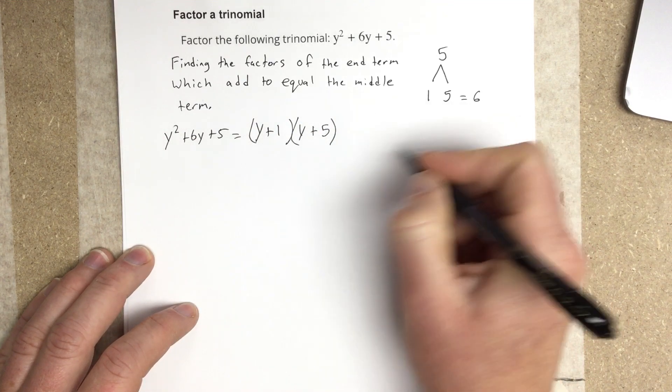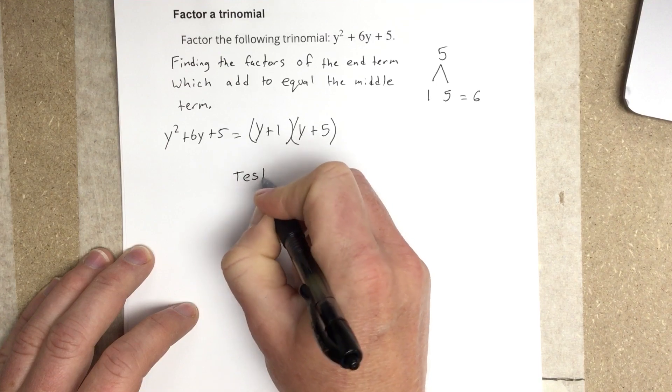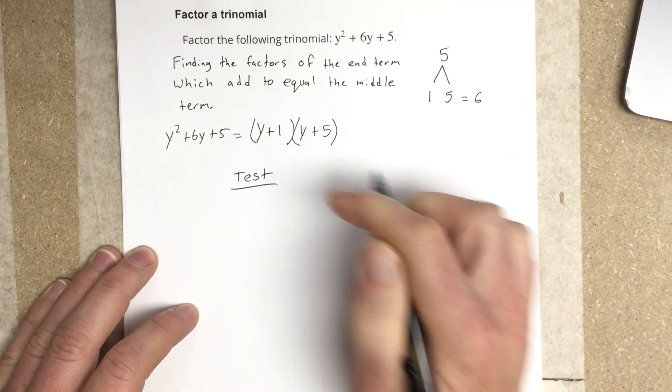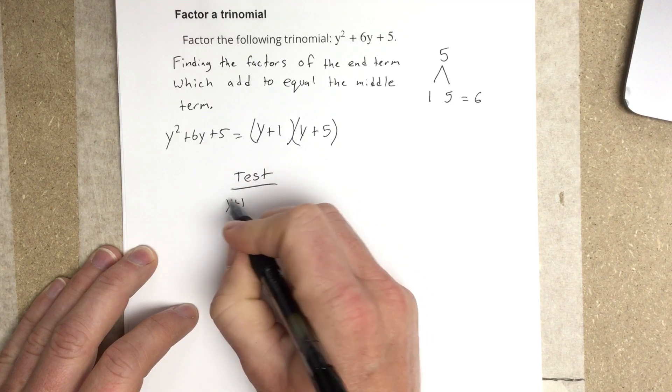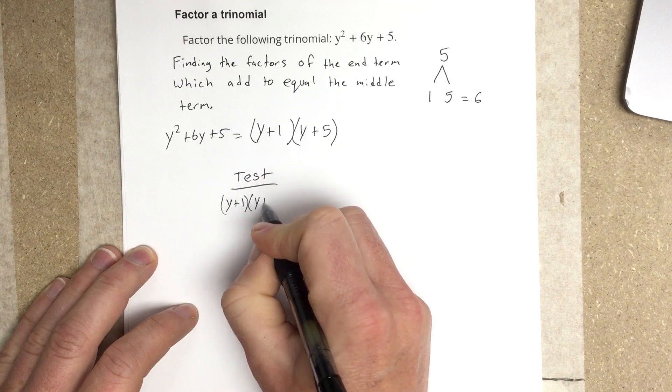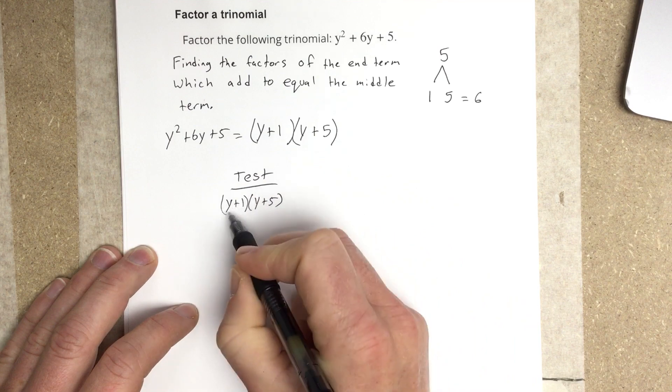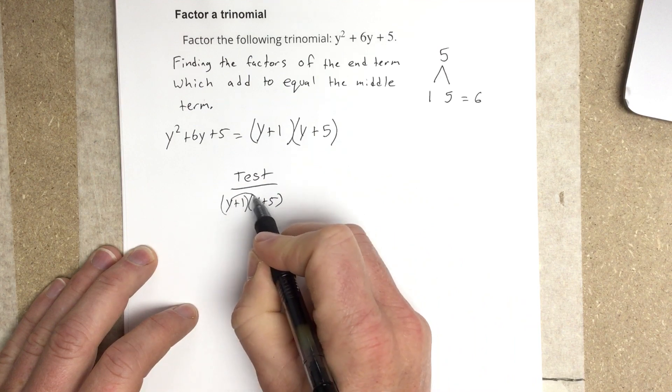Now you can actually test this. To test this out, we're going to multiply these back and see if we end with the same spot. So y plus 1, y plus 5. We multiply y times y, we get y squared. y times 5, we get 5y.